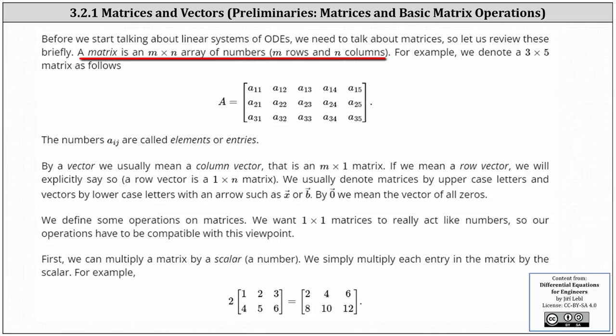A matrix is an m by n array of numbers, where m is the number of rows and n is the number of columns. Recall rows run left to right and columns run top to bottom.